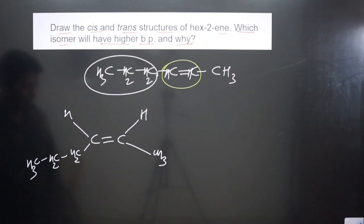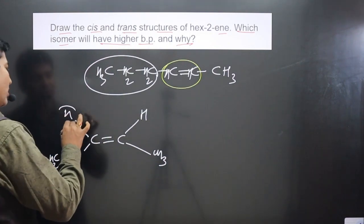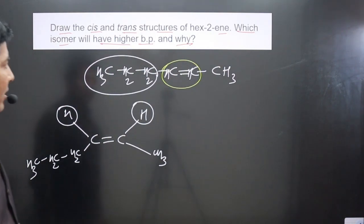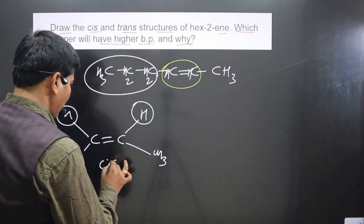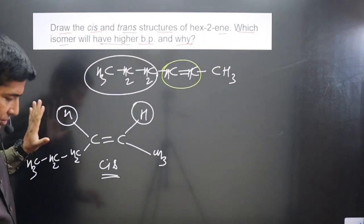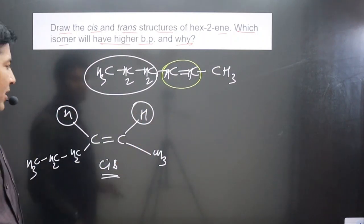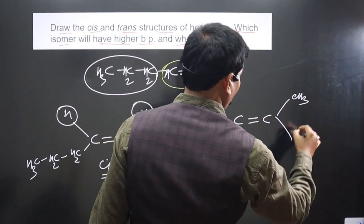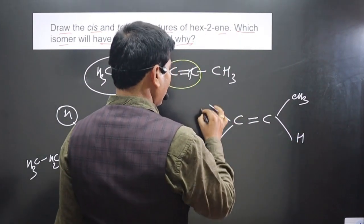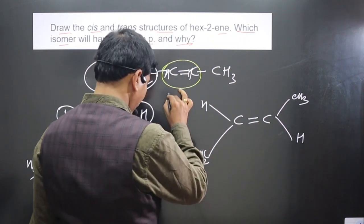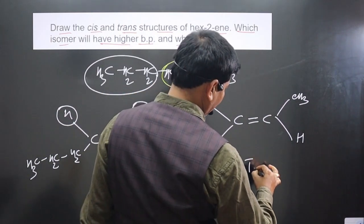This is the cis form, because the two hydrogens are on the same side of the double bond. For the trans form, we flip one side: C=C with CH3 at the top on one carbon and hydrogen on the other side, with hydrogen and the CH2CH2CH3 chain on the remaining positions. This gives us the trans structure.